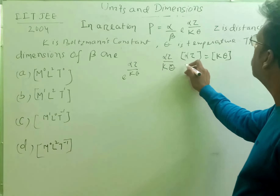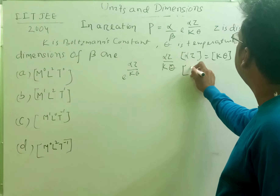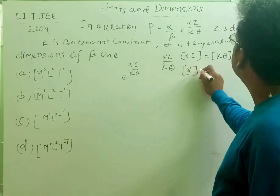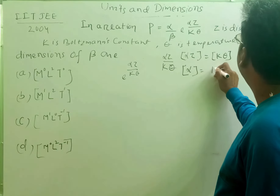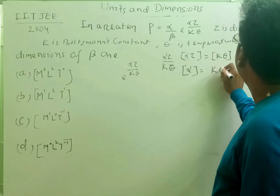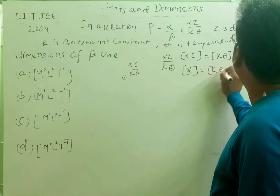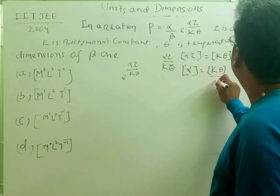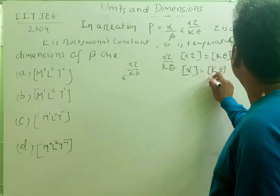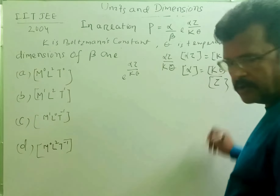So the dimensions of alpha will be equal to the dimensions of k theta divided by the dimensions of z.